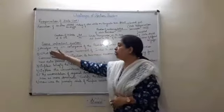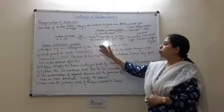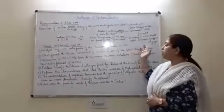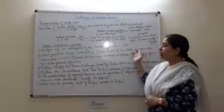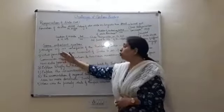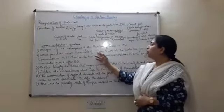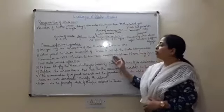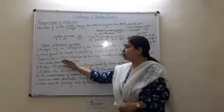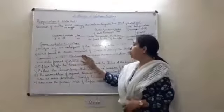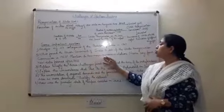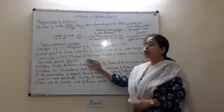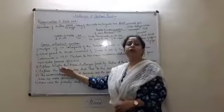Question number one: analyze any six consequences of the partition of India in 1947. Question number two: what forced the Union Government of India to set up the State Reorganization Commission in 1953? Mention its two main recommendations. Name any four states formed after 1956.